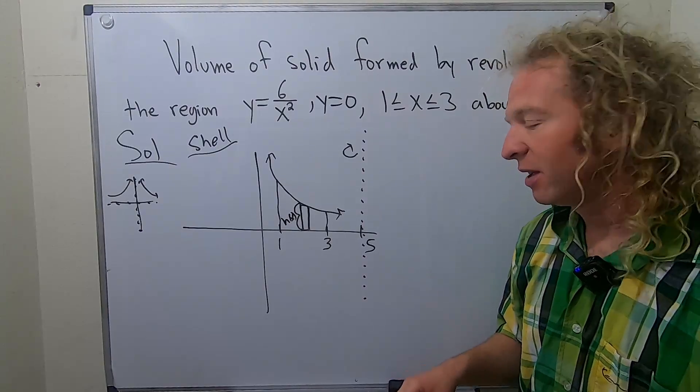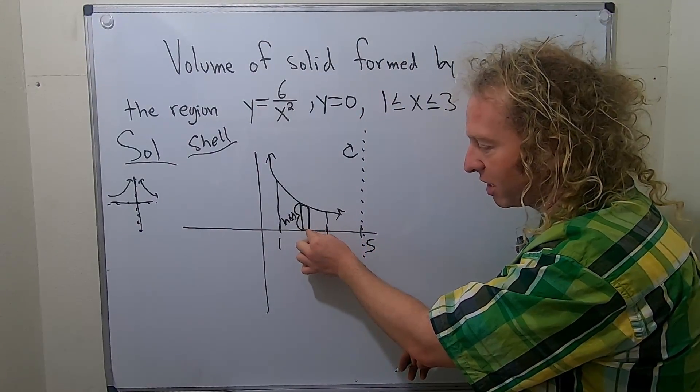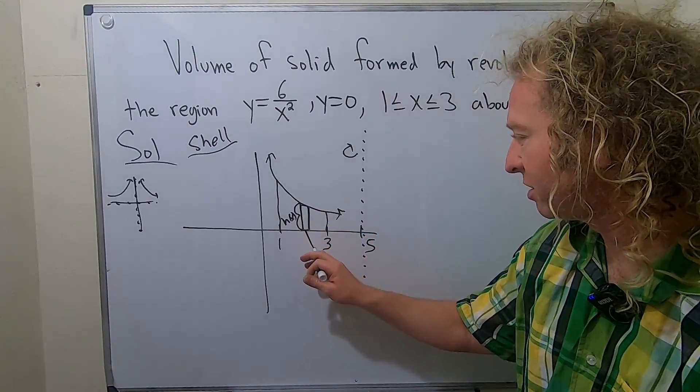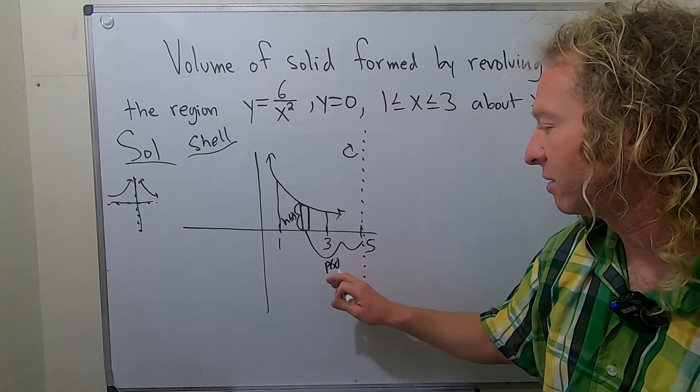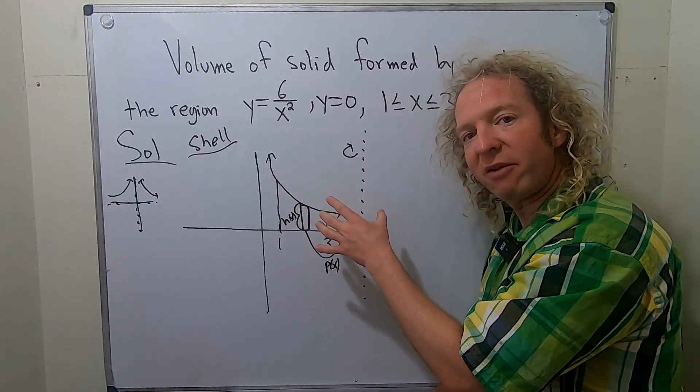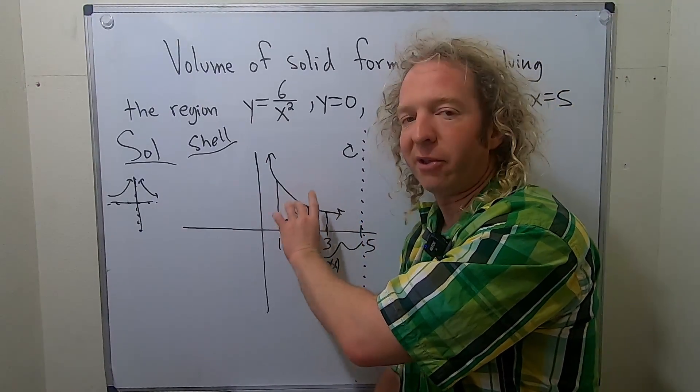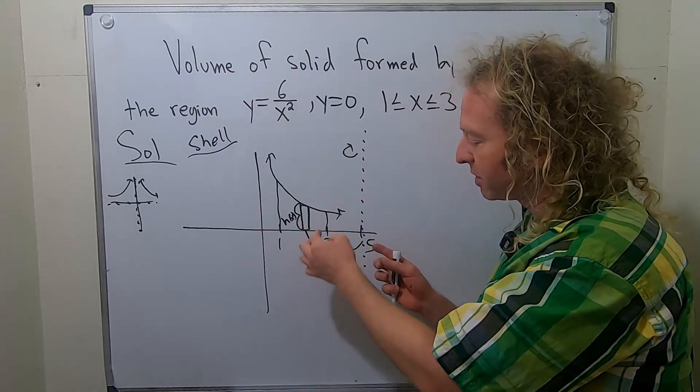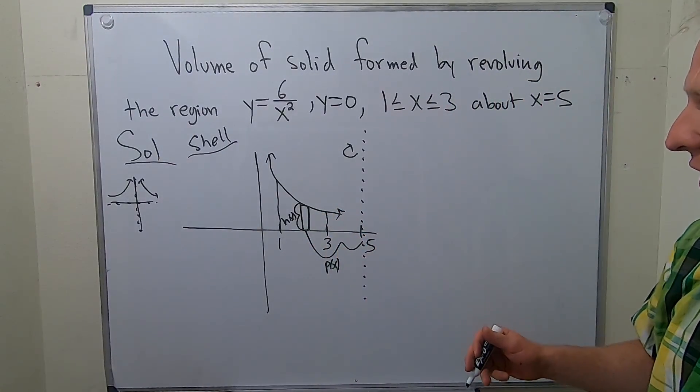Okay, p of x, it's called the average radius. It's basically the distance from the skinny part of the rectangle, so from here to the axis of revolution. So this is your p of x. That's your p of x. Okay, so you have your h of x and you have your p of x. Again, h of x is always the length of the long part of the rectangle. p of x is always the distance from the skinny part to the axis of revolution.